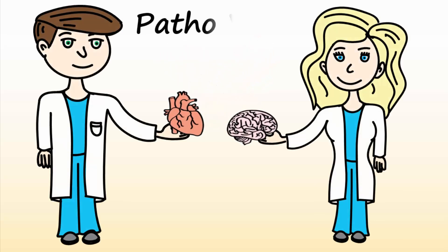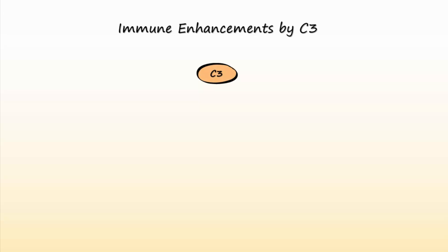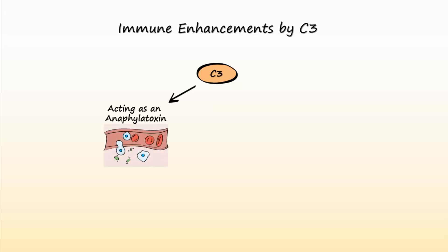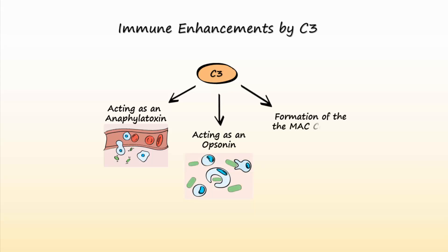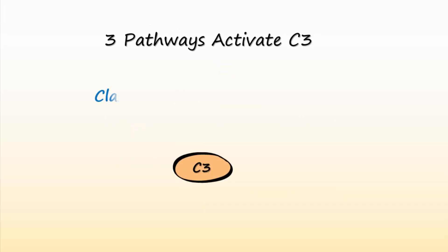Welcome to another patho video. This is the second video in the series about the complement system. Today we'll talk about how the complement system becomes activated. In the previous video, we discussed three ways that activation of C3 can enhance the innate immune response to microbes: acting as an anaphylatoxin, acting as an opsonin, and formation of the MAC complex. There are three pathways by which C3 can become activated: the classical pathway, the alternative pathway, and the lectin pathway.